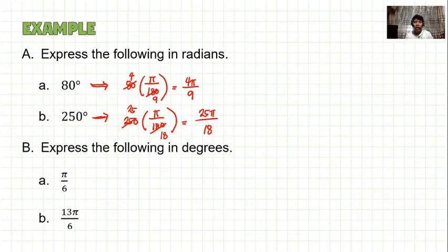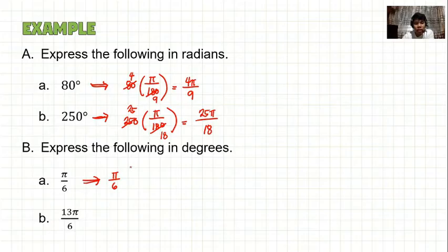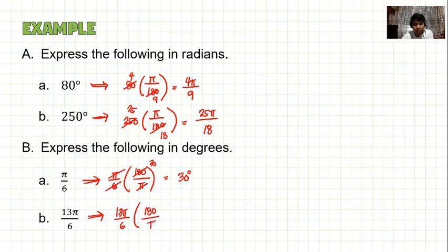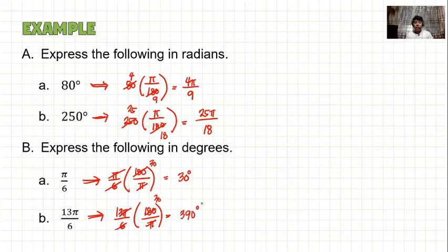Now express the following in degrees. First, π/6: multiply by 180/π. The π cancels, and 180 divided by 6 equals 30. So π/6 equals 30 degrees. Second, 13π/6: multiply by 180/π. The π cancels, 180 divided by 6 is 30, and 30 times 13 equals 390 degrees. So 13π/6 equals 390 degrees.